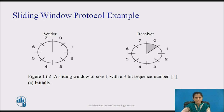Figure 1 shows an example with a maximum window size of 1. Figure 1a shows that initially no frames are outstanding, so the lower and upper edges of the sender's window are equal. As time goes on, the situation progresses. Unlike the sender's window, the receiver's window always remains at its initial size, rotating as the next frame is accepted and delivered to the network layer.